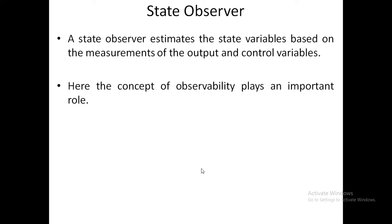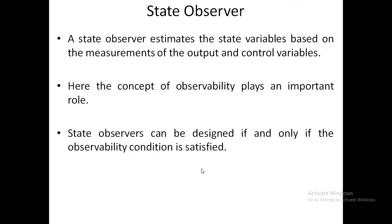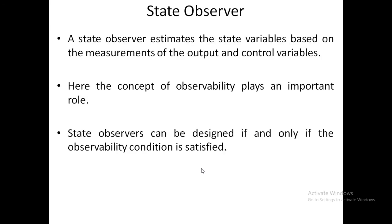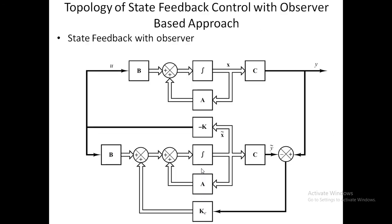The concept of observability plays an important role. A state observer can be designed if and only if the observability condition is satisfied. Consider a plant defined by x-dot equals Ax plus Bu and y equals Cx. The block diagram representation of this plant shows Ax plus Bu equals x-dot and y equals Cx.